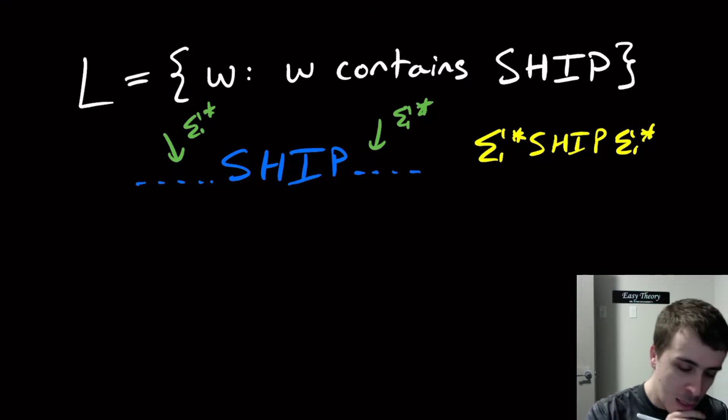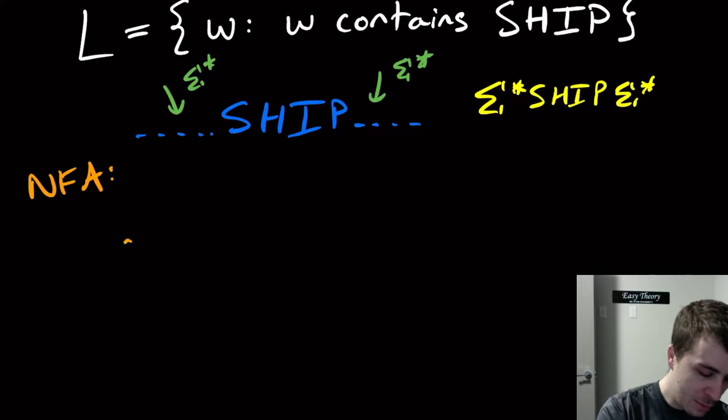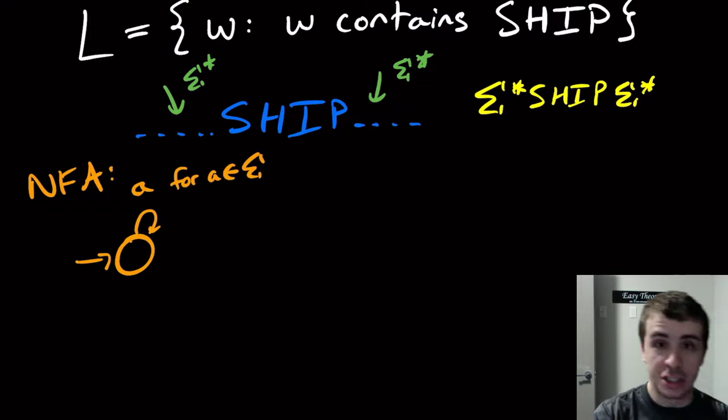That's obviously a regex. In order to turn this into an NFA, we can just use the standard conversion, which is we're going to have a start state that will loop on everything. So it loops on all a for a in the alphabet, the English alphabet.